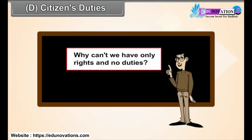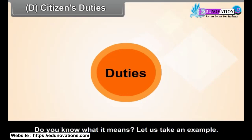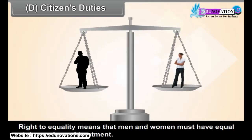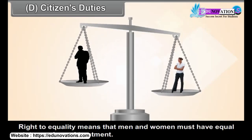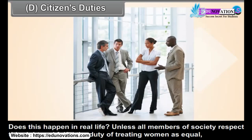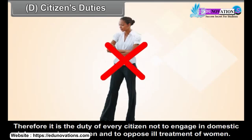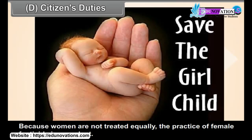Citizens' Duties. Why can't we have only rights and no duties? It is often said that rights and duties are two sides of the same coin. Right to equality means that men and women must have equal status and equal treatment. Does this happen in real life? Unless all members of society respect this right and fulfill the duty of treating women as equal, this right will never fully come into being. Therefore, it is the duty of every citizen not to engage in domestic violence against women and to oppose ill-treatment of women. Because women are not treated equally and the practice of female foeticide is prevalent, is it not a duty to respect women as equal citizens?